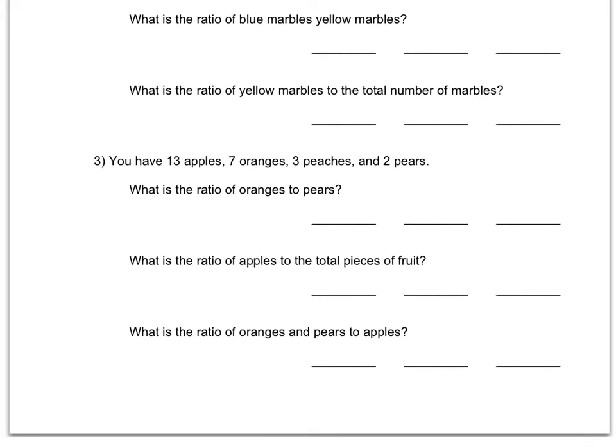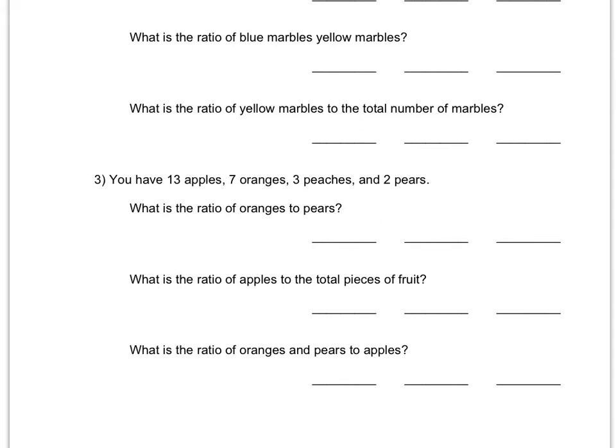Let's go down to here. On number three, it says you have 13 apples, 7 oranges, 3 peaches, and 2 pears. I'm going to do this bottom one. What is the ratio of oranges and pears to apples? So because of the word and, I'm going to count both oranges and pears. So it says I have 7 oranges and 2 pears, so that's 9 altogether.